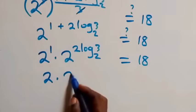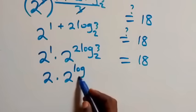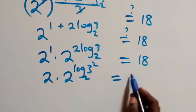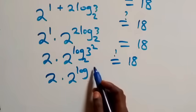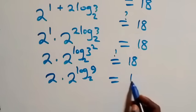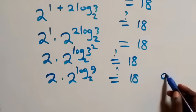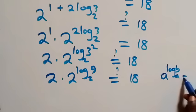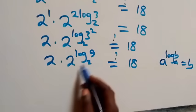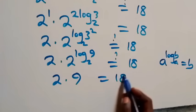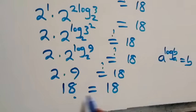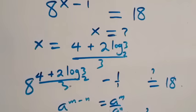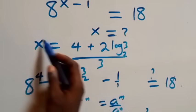From the law of indices we can write this as 2 raised to power 1 times 2 raised to power 2 log₂3 equals 18. That is 2 times 2 raised to power 2 log₂3. From the rule a raised to power log_a(b) equals b, we have 2 raised to power log₂(3²) equals 9. So we have 2 times 9 equals 18, which is indeed 18. Left hand side equals the right hand side, hence we conclude that x equals (4 + 2 log₂3) / 3 satisfies the given problem.